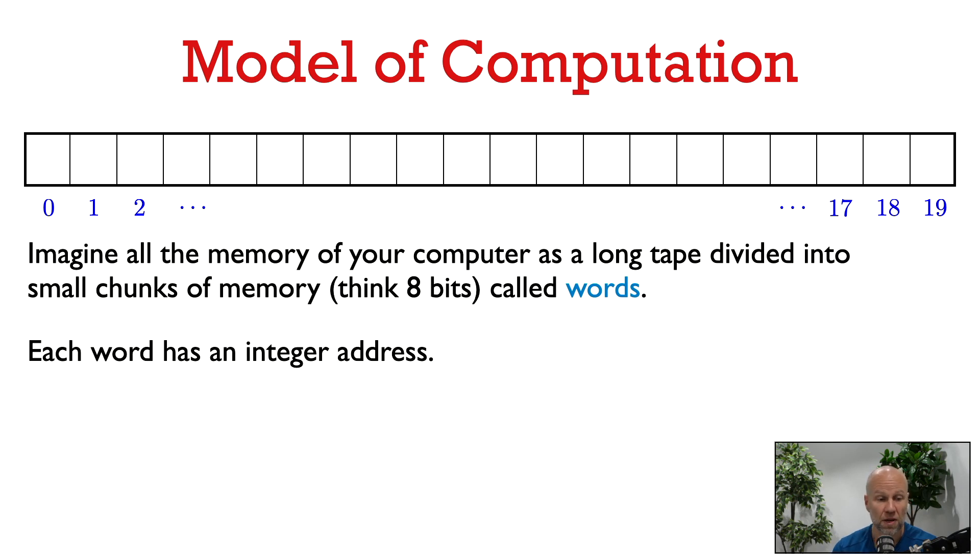We think of the memory of the computer as a very long tape divided into cells or words. Each word is a small contiguous chunk of memory. You can think of a word as being one byte or eight bits, but this level of detail won't really matter for us. Each word has an integer address giving its location on the tape. So you see here in the picture, I have labeled the words with their addresses 0, 1, 2, up to 19 in this example. So this way we can refer to, for example, the 10th word in the memory and go look at that cell in the tape and read what is written there.